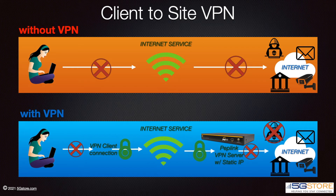This means it can be accessed from an outside connection, provided it has the correct information and credentials to do so. Once we're connected to the VPN, any information that we send and receive through our laptop is going to be encapsulated and transmitted securely from the coffee shop Wi-Fi through the open internet and back to our Peplink router at home. This protects us from any potential threats on the coffee shop Wi-Fi network, and it also lets us access local devices on our Peplink router, such as security cameras or a hard drive, all as if we were connected directly to our home network.